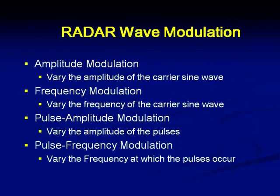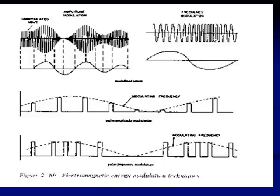Now let us see what types of modulations we employ. Normally we go with amplitude modulation of the sine wave. But in the case of CW radars, you need to go for frequency modulation to get the range information — FMCW radars are used to get the range; otherwise, it is not possible. For pulse radars, normally we go with pulse amplitude modulation, wherein the amplitude of the pulses will be changed. In certain cases, there is use of pulse frequency modulation. The different types of modulation schemes result in different modulated waveforms.